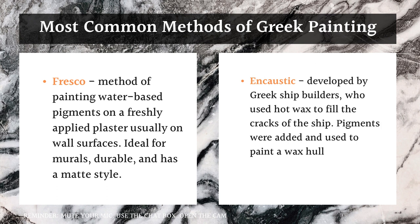The most common methods of Greek painting include fresco, which is a method of painting water-based pigments on freshly applied plaster, usually on wall surfaces. These are ideal for murals, durable, and have a matte style. In fresco, you combine pigments with water and apply them to wet plaster — like cement on a wall. While the plaster is still wet, you add the fresco paint, which is colored pigment mixed with water.